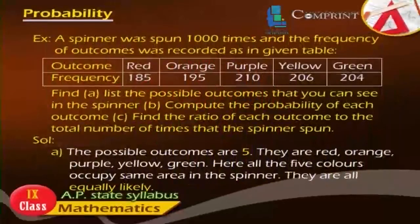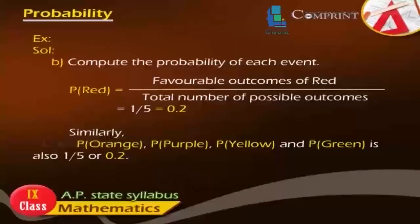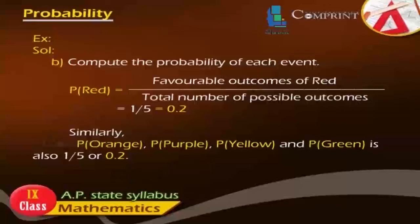Solution A: The possible outcomes are 5. They are red, orange, purple, yellow, and green. All 5 colors occupy the same area in the spinner, so they are all equally likely. B: Compute the probability of each event. P(red) = favorable outcomes of red by total number of possible outcomes = 1 by 5 = 0.2. Similarly, P(orange), P(purple), P(yellow), and P(green) are also 1 by 5 or 0.2.